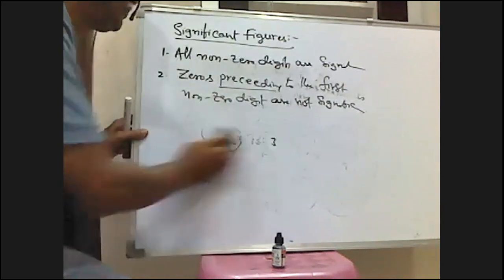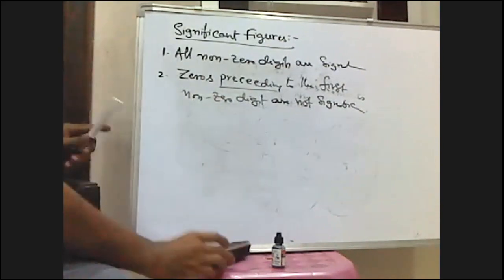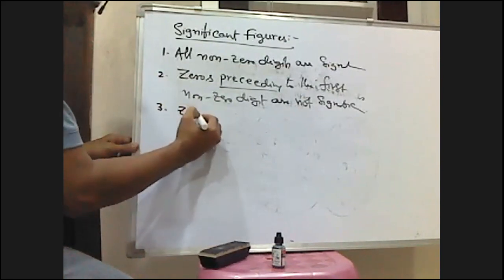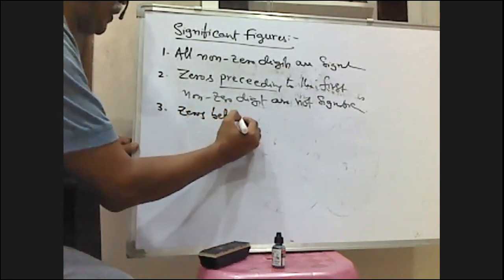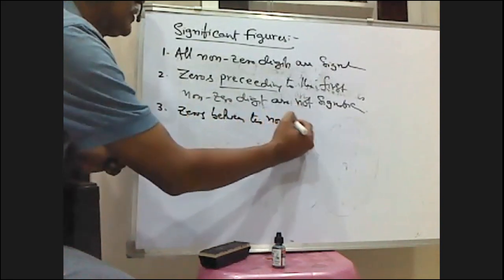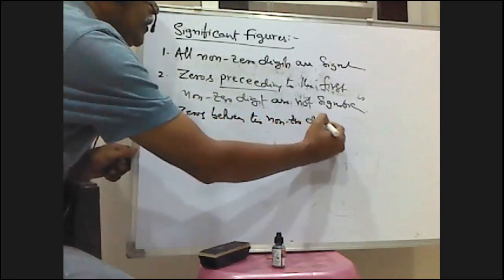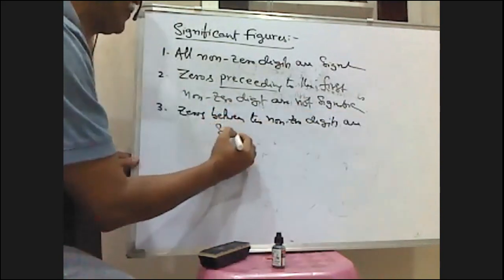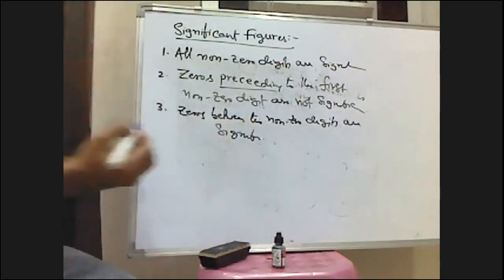The third rule is: zeros between two non-zero digits are significant. For example, 3.001 has four significant figures, because the zeros between the non-zero digits 3 and 1 are significant.